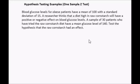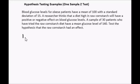The first step is to state the null and alternate hypotheses. If you aren't comfortable with stating the null hypothesis, you may want to check out my previous video on how to state them. The null hypothesis, H₀, is the accepted fact — blood glucose levels are 100, so the population mean μ equals 100.